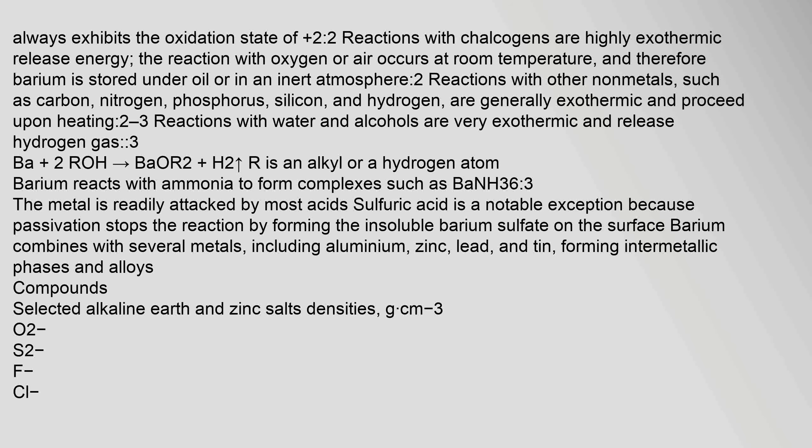Reactions with water and alcohols are very exothermic and release hydrogen gas: Ba + 2ROH → Ba(OR)₂ + H₂, where R is an alkyl or hydrogen atom. Barium reacts with ammonia to form complexes. The metal is readily attacked by most acids. Sulfuric acid is a notable exception because passivation stops the reaction by forming the insoluble barium sulfate on the surface. Barium combines with several metals, including aluminium, zinc, lead, and tin, forming intermetallic phases and alloys.